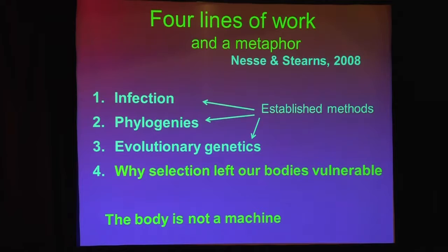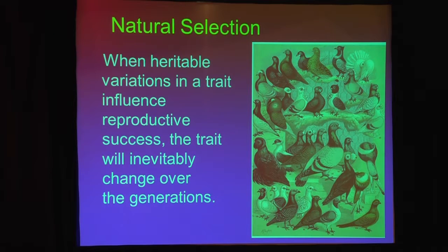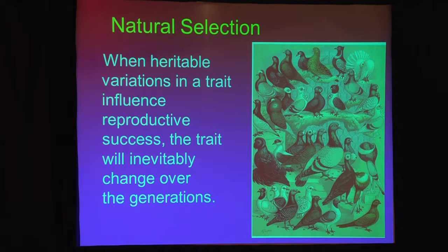I'm mainly going to talk about the adaptive significance of aspects of disease that leave us vulnerable. We're making progress in infectious disease, tracing phylogenies, and evolutionary genetics. But the new questions that George Williams and I have encouraged people to ask are: why did selection leave our bodies so vulnerable to disease? Most of you have heard about natural selection and know the basic idea. Darwin watched a bunch of pigeons and asked himself, do they all come from the same pigeon stock, becoming that dramatically different — the fantail, the large one, the puffer, the tiny ones?